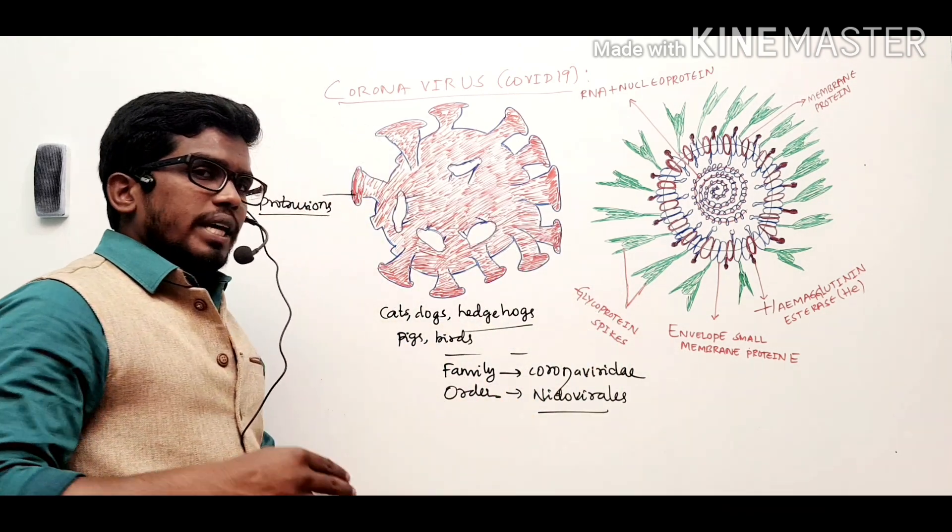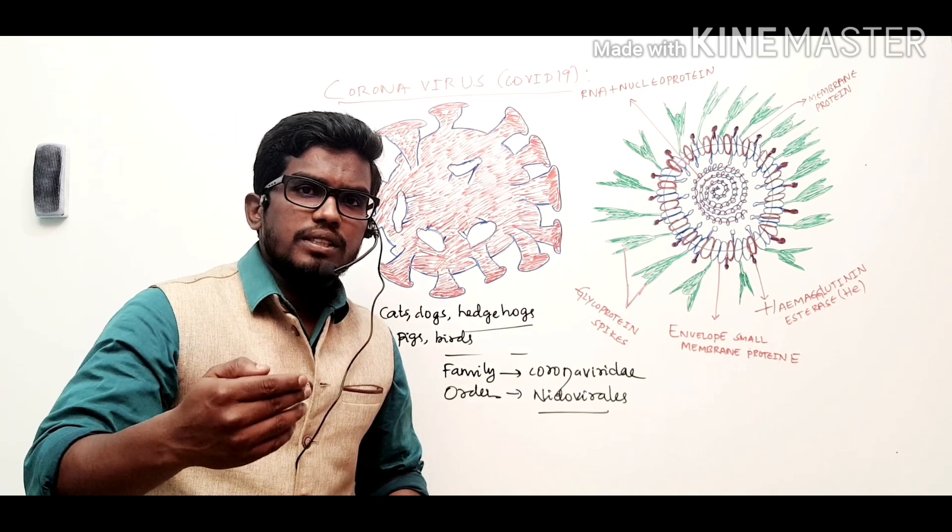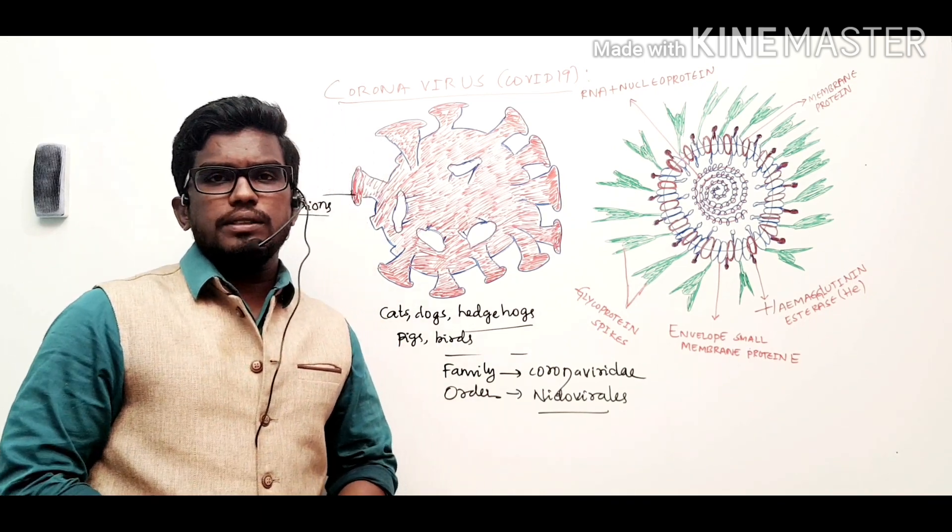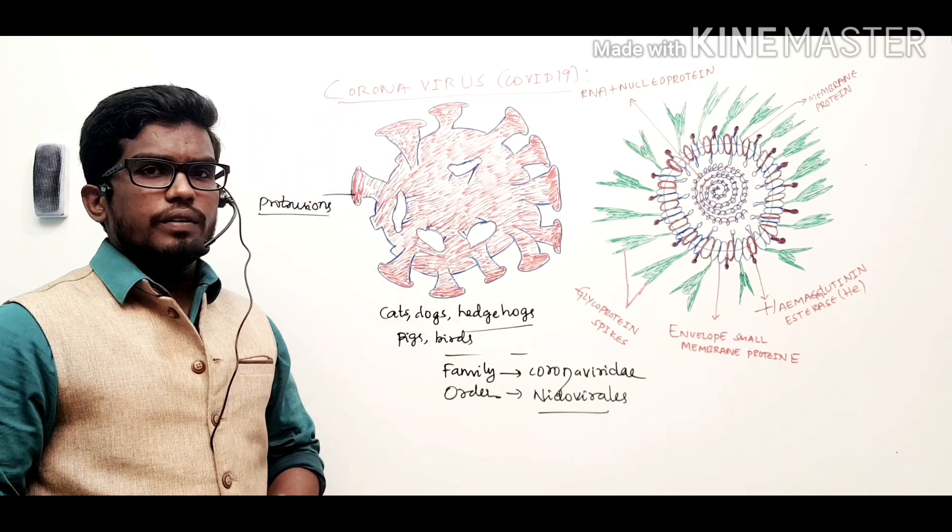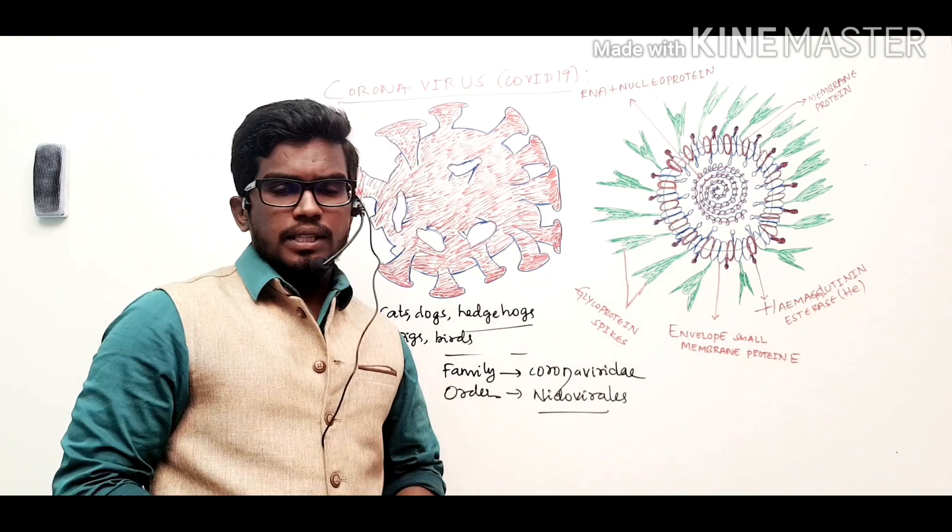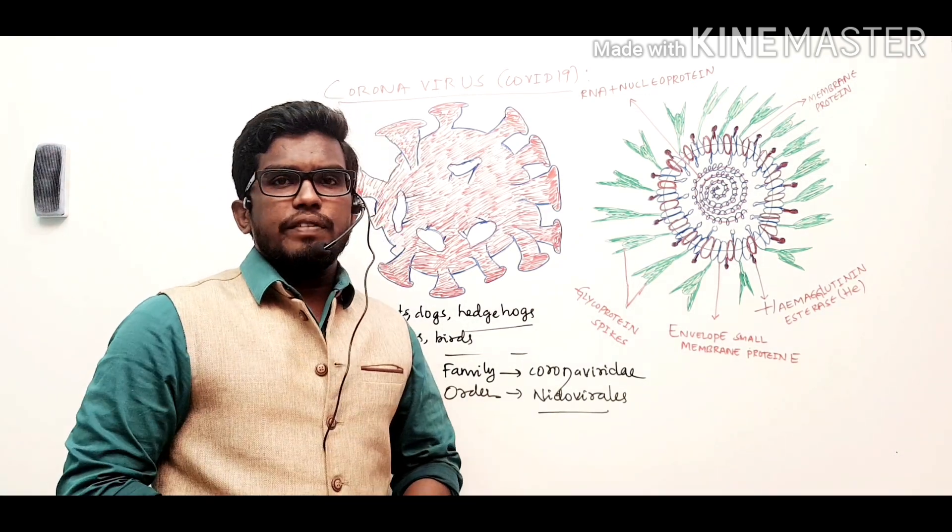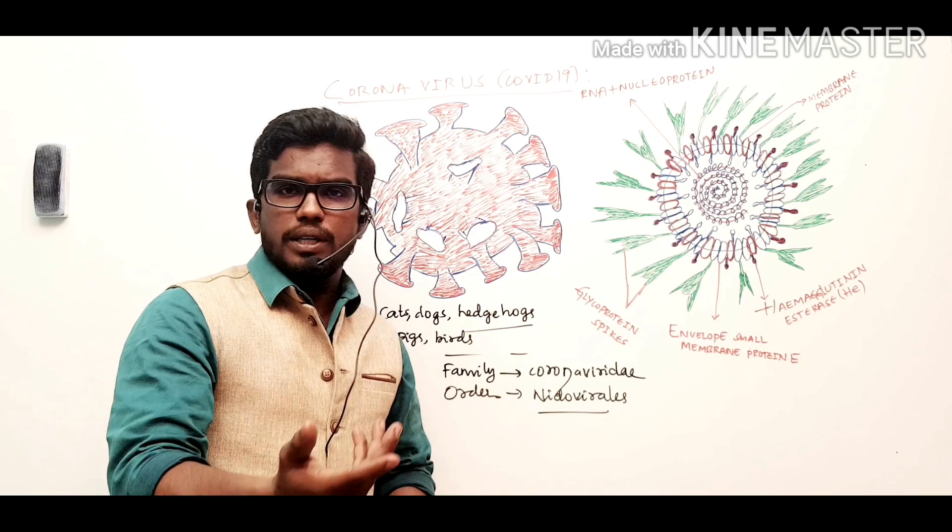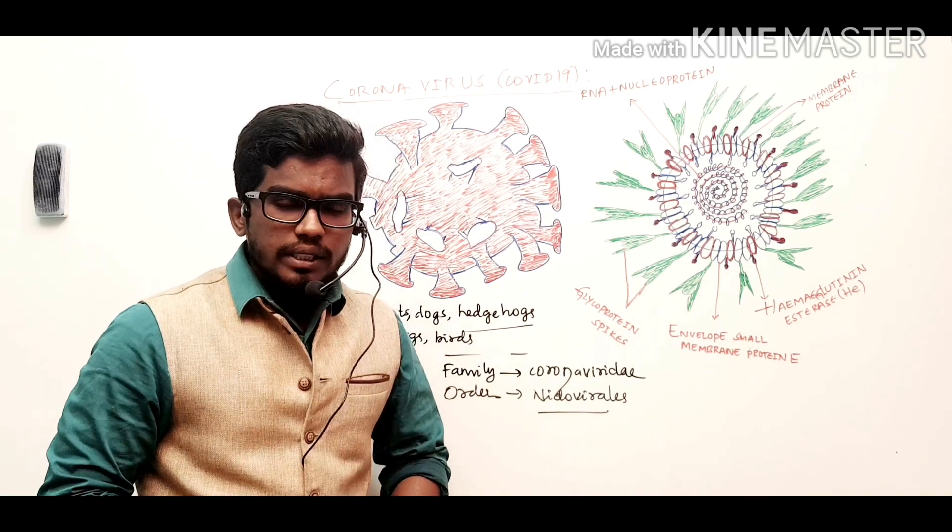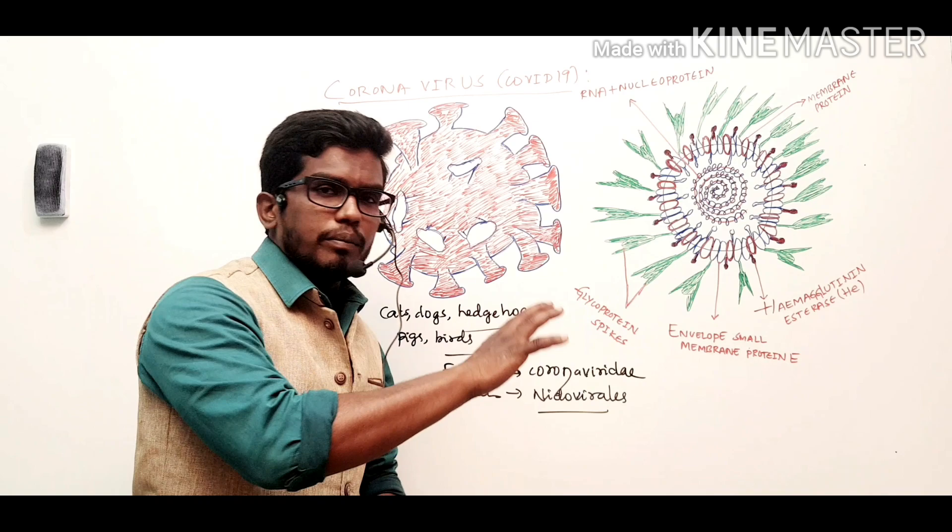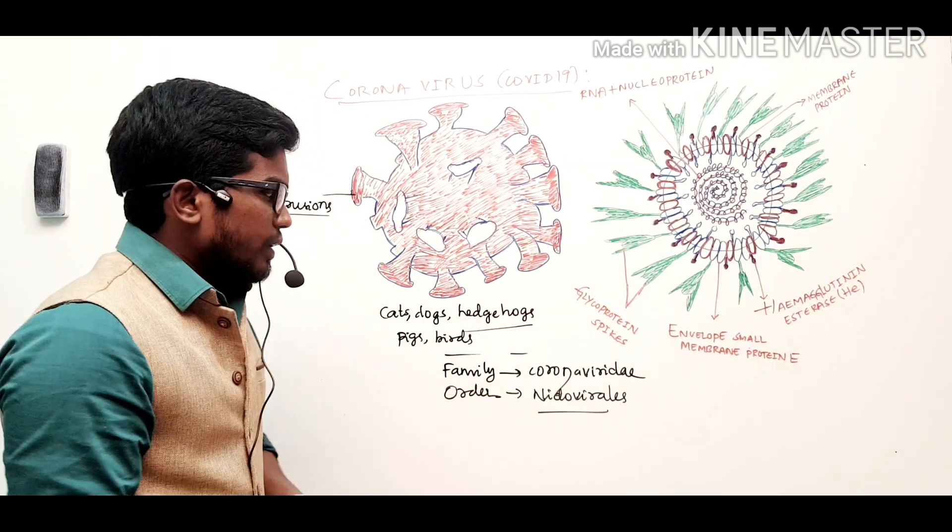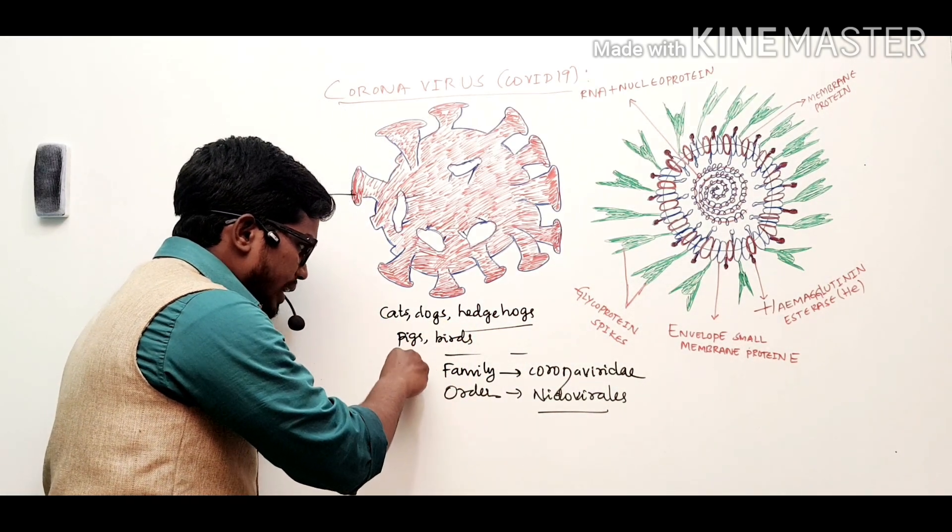So they have four different types of genera: alpha, beta, gamma, and delta coronavirus. Alpha and beta coronavirus generally infects the mammals. Gamma coronavirus generally infects the avian animals or the birds, and delta coronavirus basically infects both the mammals as well as the birds.